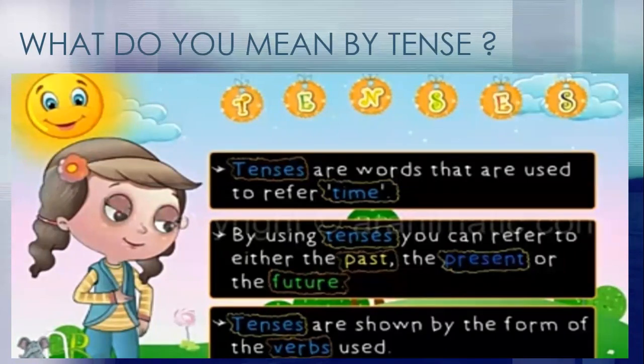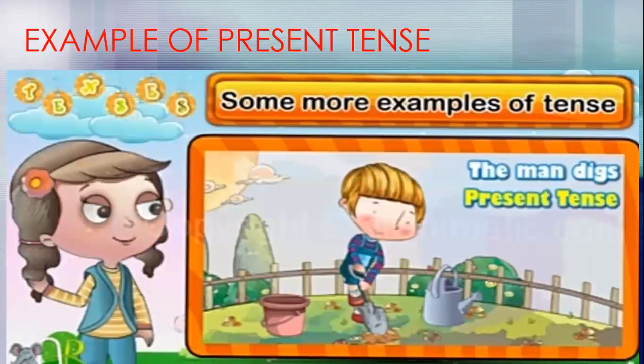Today you will study about the present tense. First, let me explain what tenses mean. Tenses are words used to refer to time. Time may be past — which is already finished — present, which is going on, and future, which is going to come.